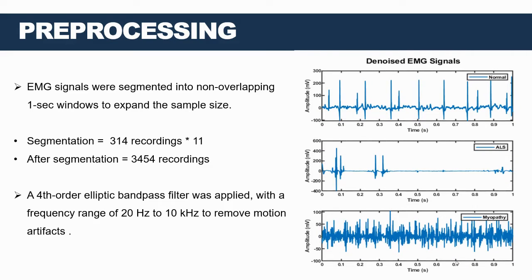Next comes the preprocessing stage applied to EMG signals to prepare them for further analysis. First, the EMG signal was segmented into non-overlapping one-second windows. This segmentation expanded our sample size and provided a more detailed view of the data. In total, we performed segmentation of 314 original recordings of 11 seconds, resulting in 3,454 individual signals of one-second duration. To ensure data quality, a fourth-order elliptic bandpass filter was applied with a frequency range of 20 Hz to 10 kHz. Its primary purpose was to eliminate motion artifacts, enhancing the accuracy of the data for subsequent analysis.